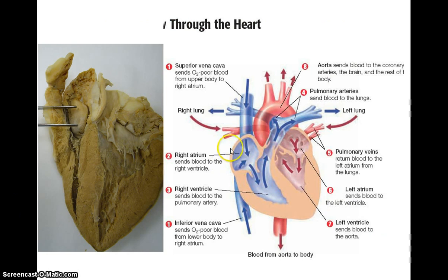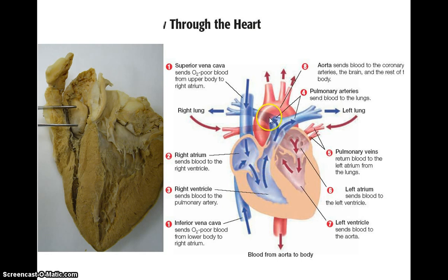Blood returns to the right atrium from the superior and inferior vena cava, passes the tricuspid valve, and enters the right ventricle, which ejects blood through the pulmonary artery to the right and left lung.